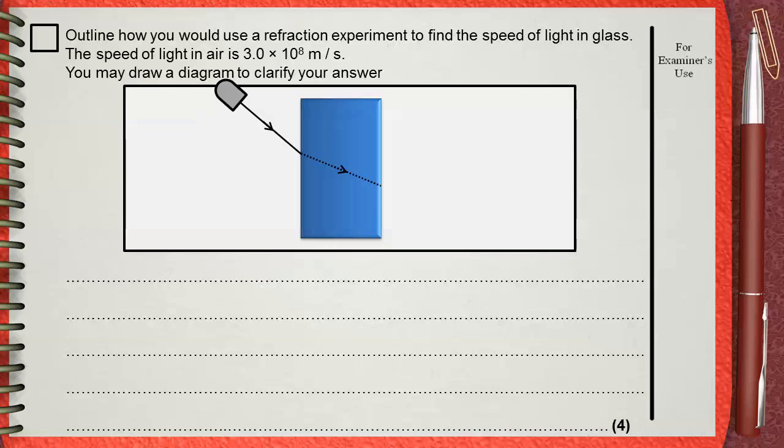Also, when light goes out of the glass block, it will refract in the opposite direction, because now it's coming from denser to rare medium. So this is what you will see, a broken light ray.